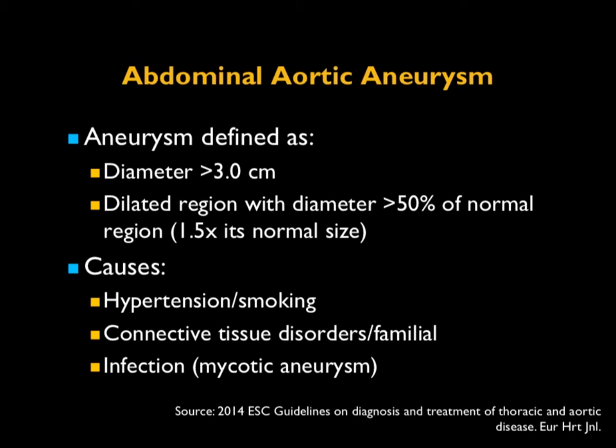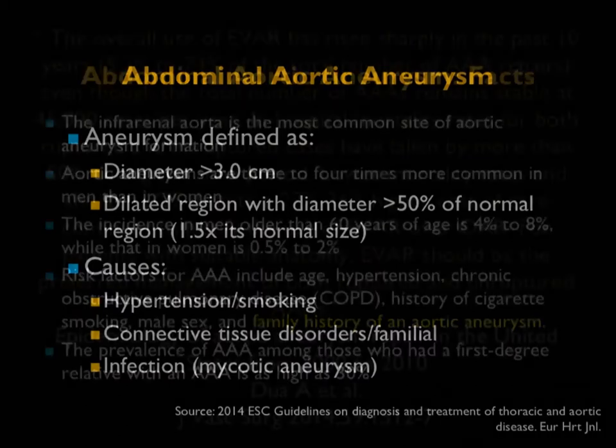When you look at the causes of aneurysms, hypertension and smoking are the two biggies, along with connective tissue disease, familial causes, things like Marfan's and Loeys-Dietz, and of course infection — mycotic aneurysms. When you look at those three groups, hypertension and smoking is really where things are, and especially smoking is the one that is preventable.